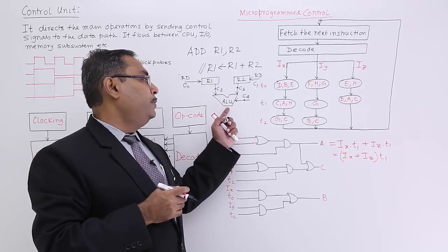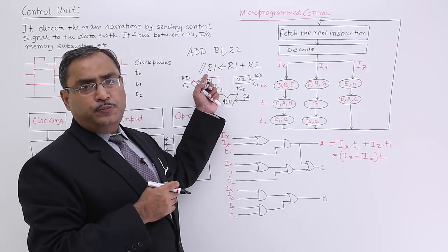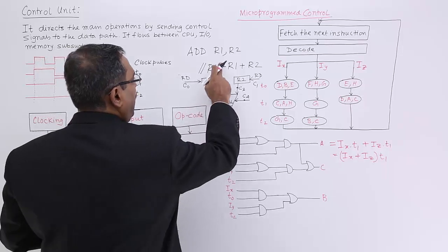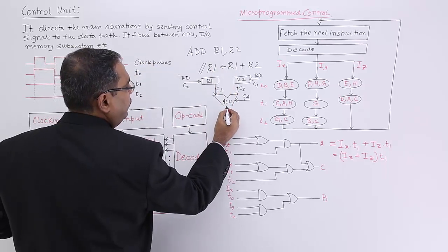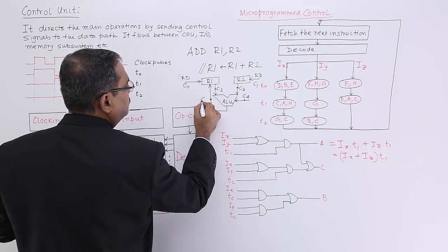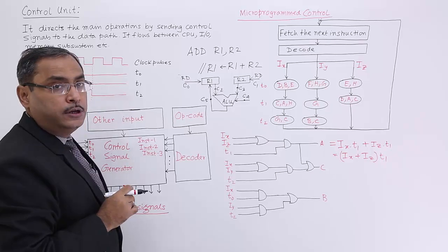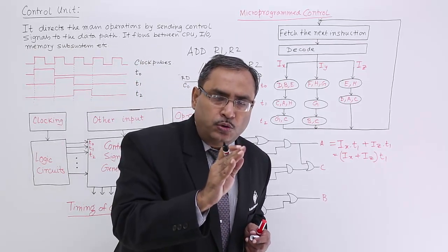What will be the output? Output will be obtained from the ALU as a sum. Please tell me where should I keep this output? I should keep this output to R1. So this output will be going to R1.